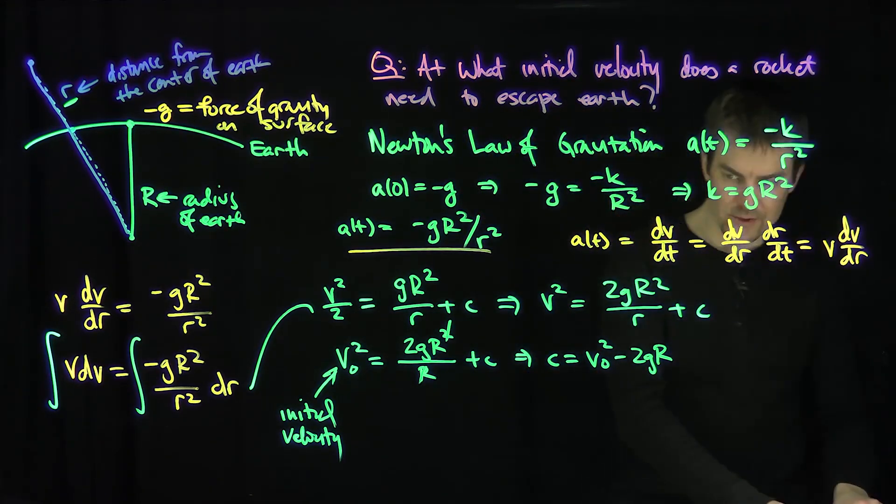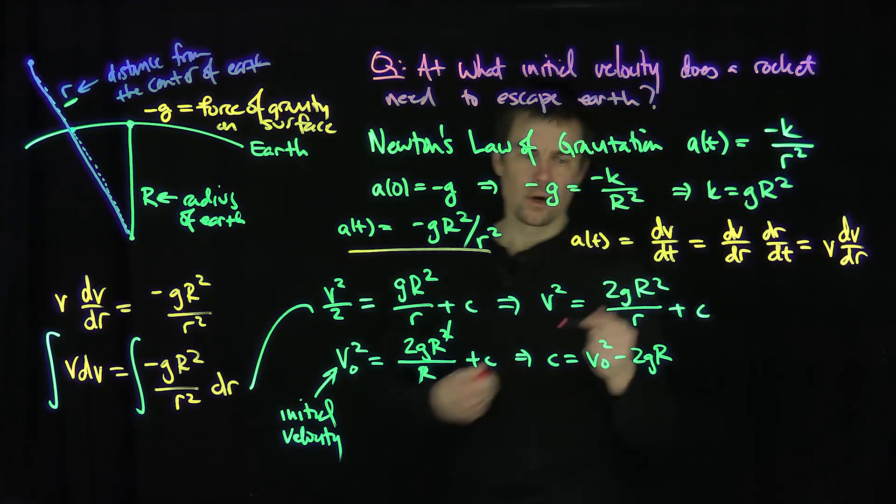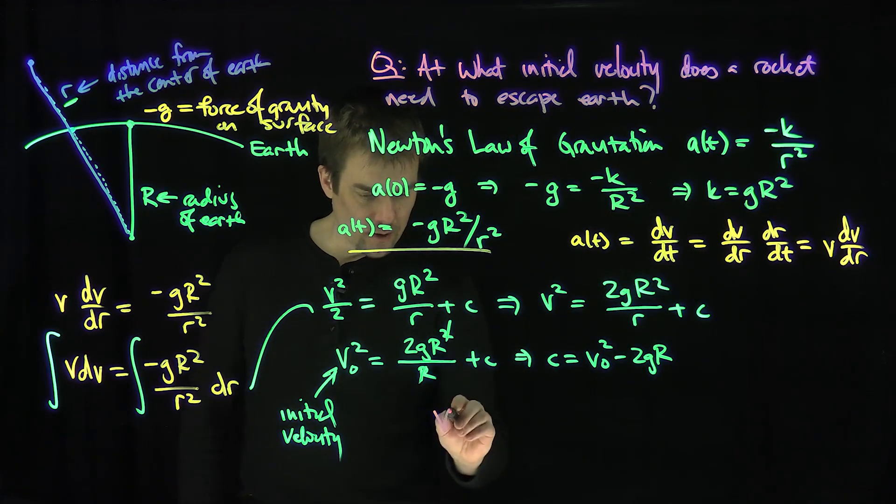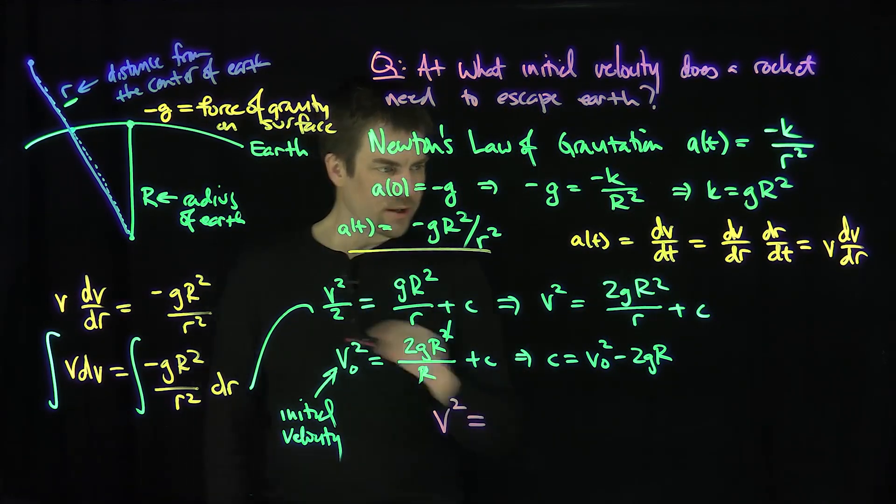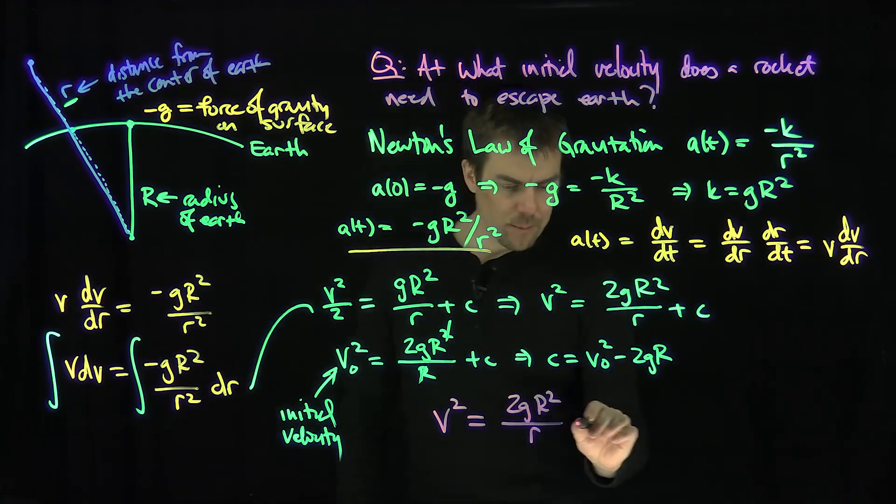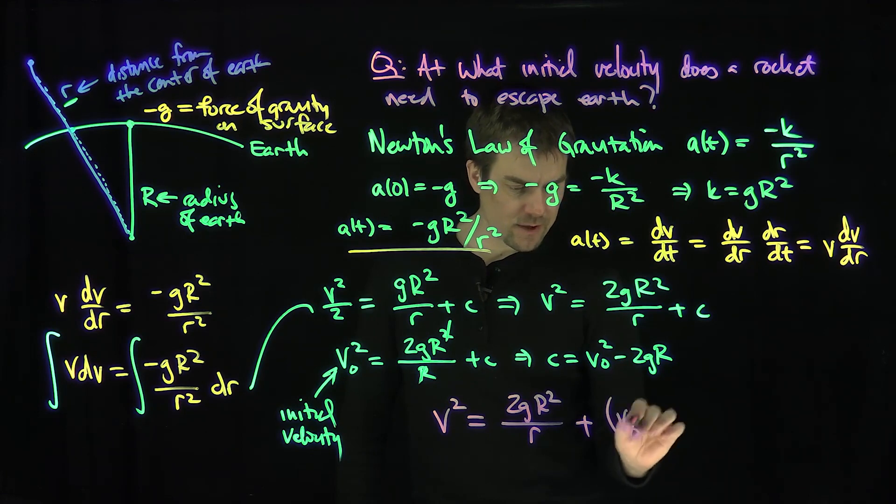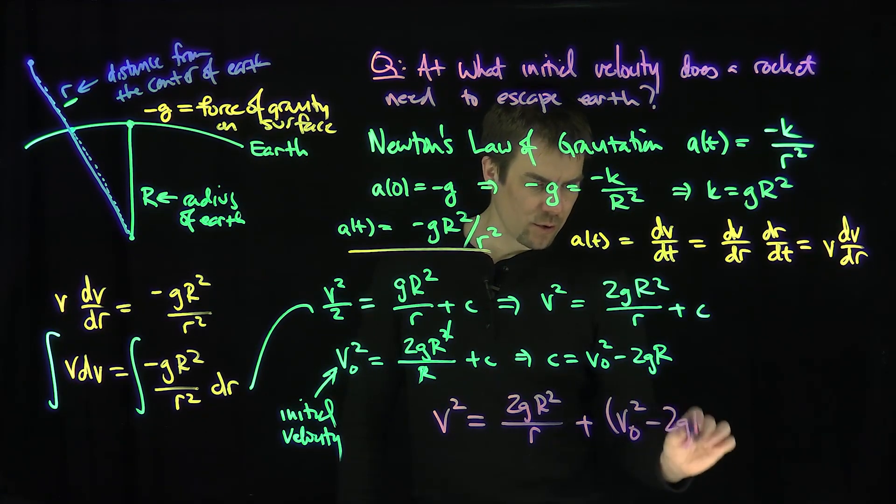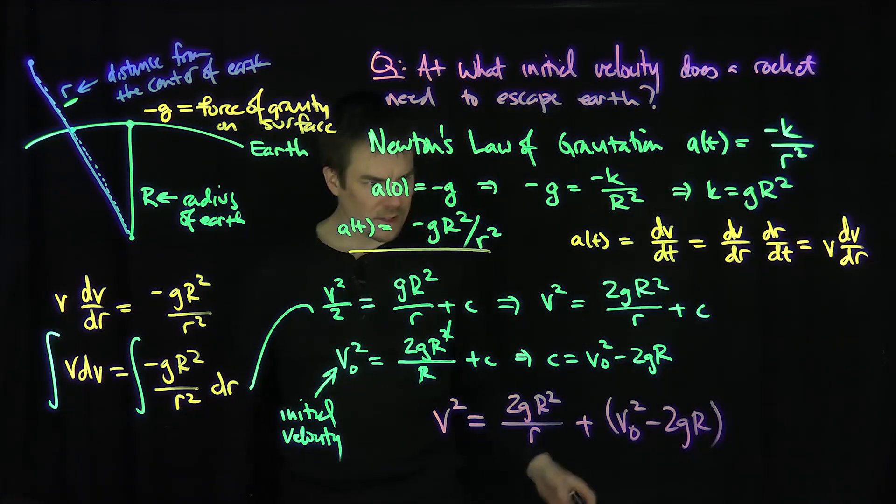So if I fill that into my solution to my differential equation, what do we conclude? We conclude from this that the velocity squared is equal to 2gR squared over r, and then plus this constant c, which is v0 squared minus 2gR. That's my constant.